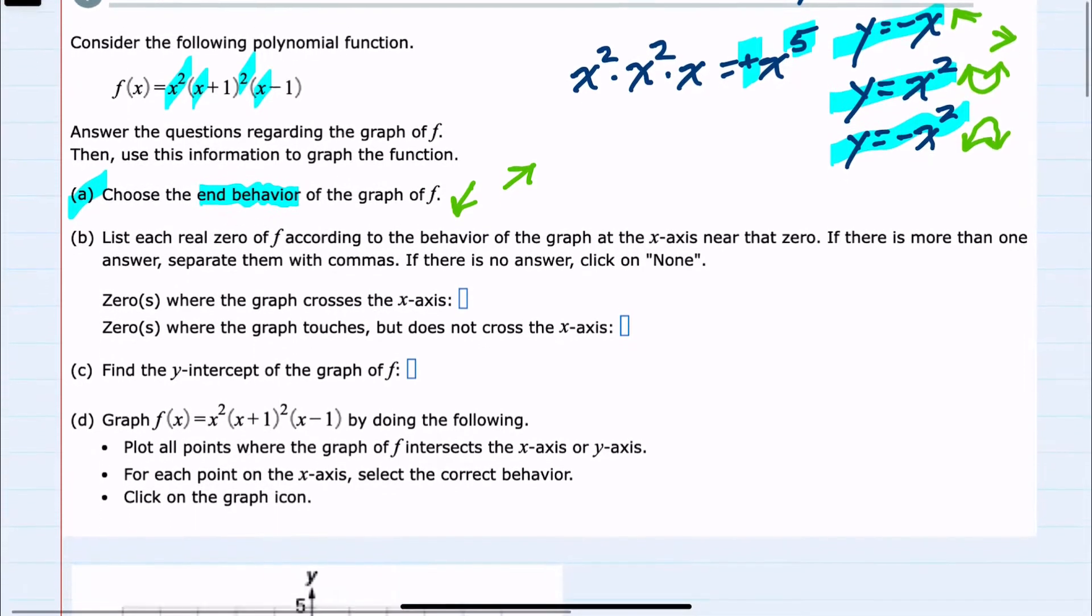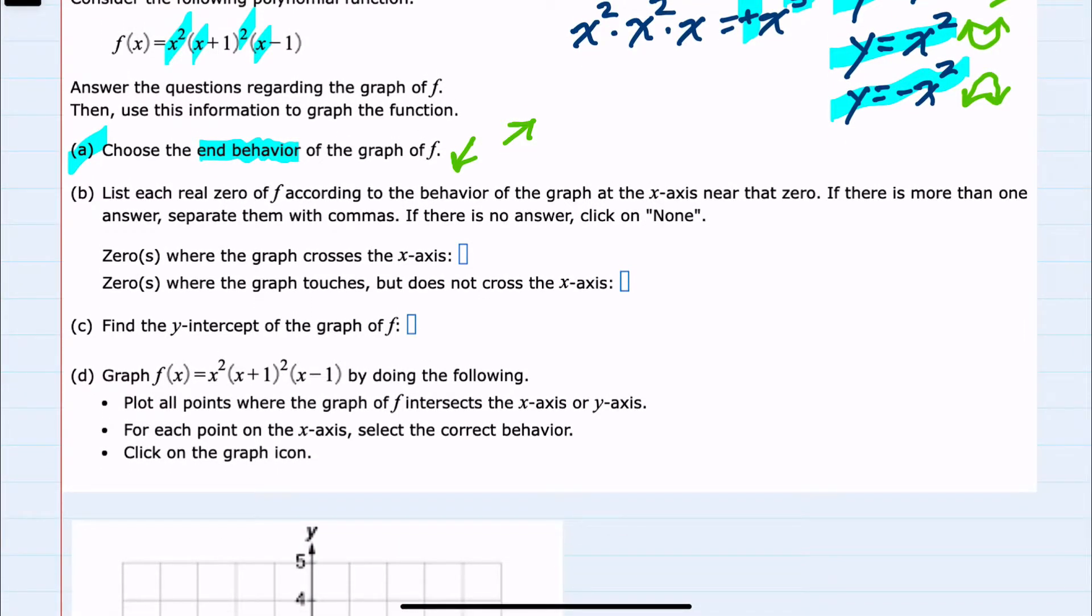So we have determined end behavior. Next, we're asked to find each of the zeros and whether it crosses or touches the x-axis at those zeros. So first to find the zeros, I'll look at each of these terms that are being multiplied and say that if the end result is 0, then either that first term, x squared, must be 0, or the second, x plus 1 squared, must be 0, or the last term, x minus 1, must be 0. So to solve for each one of these, the first one, x squared is x times x equals 0, so we get two solutions, either x is 0 or the second x is 0. So we have 0 with a multiplicity of 2.